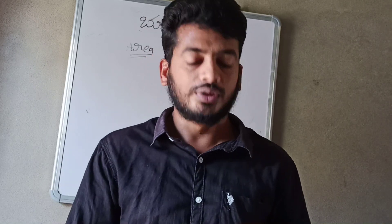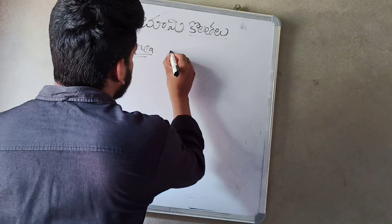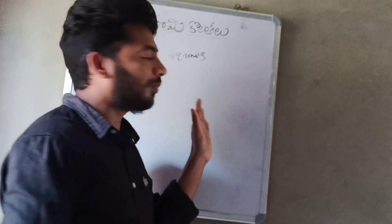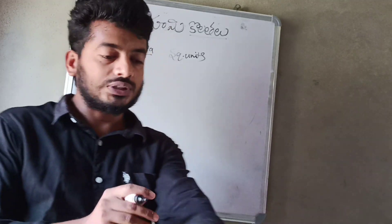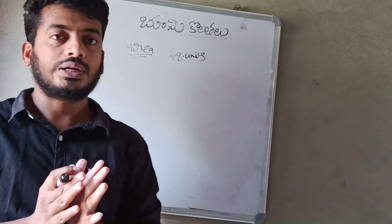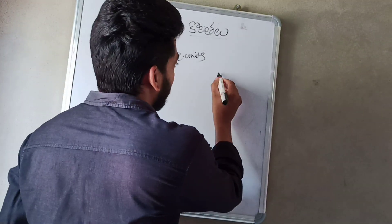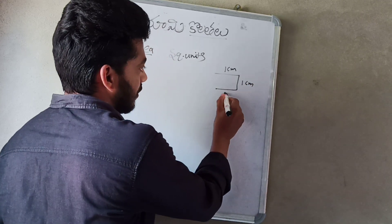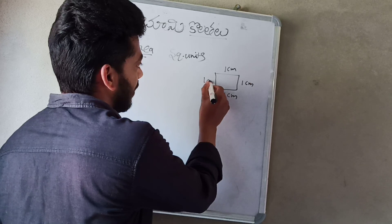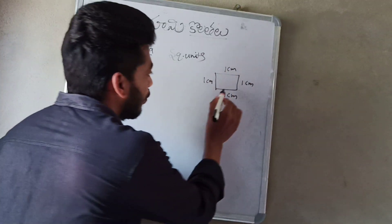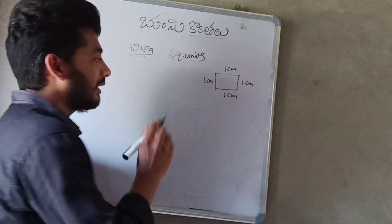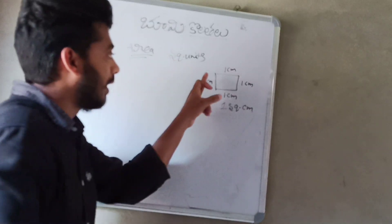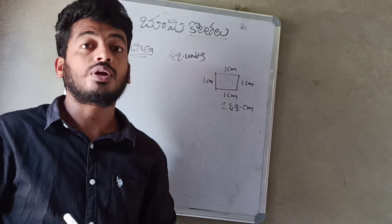The units of area are square units. Square units — for example, if each side is 1 cm, then 1 cm × 1 cm equals 1 square centimeter. That is one square unit.